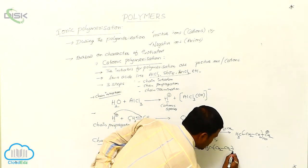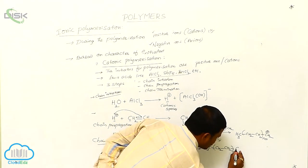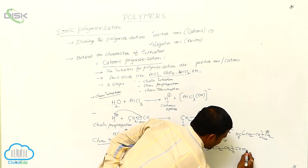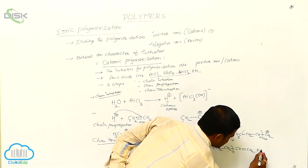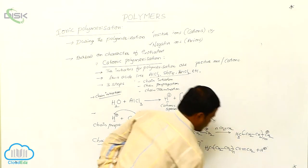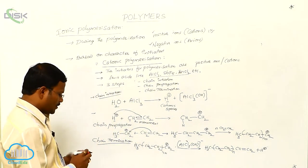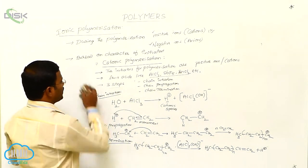So I would like to write the final product as CH2CH2N CH double bond CH2 plus H plus. So this is the final resulting polymer produced from cationic polymerization.